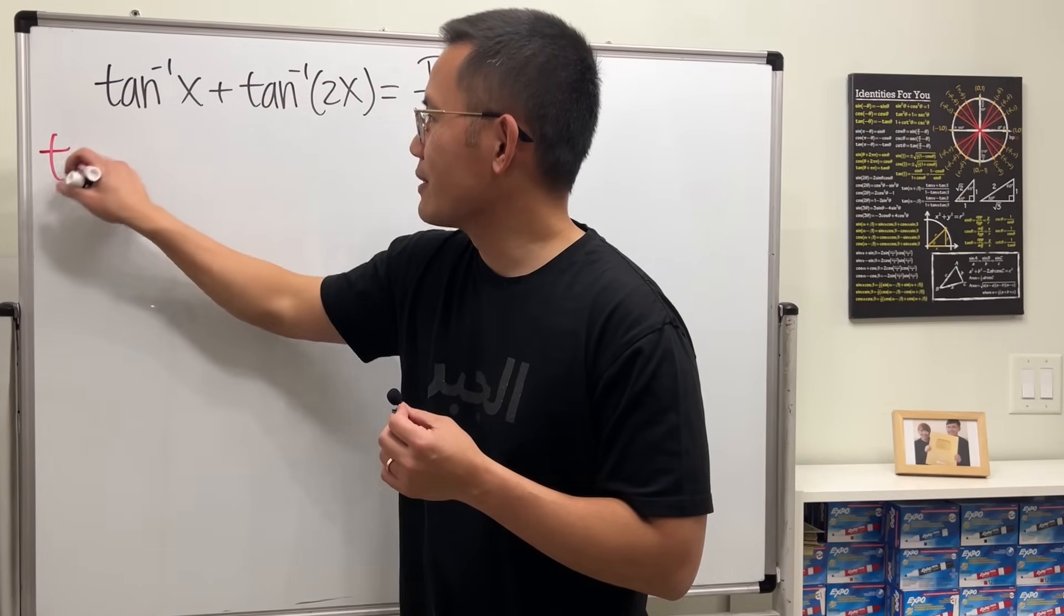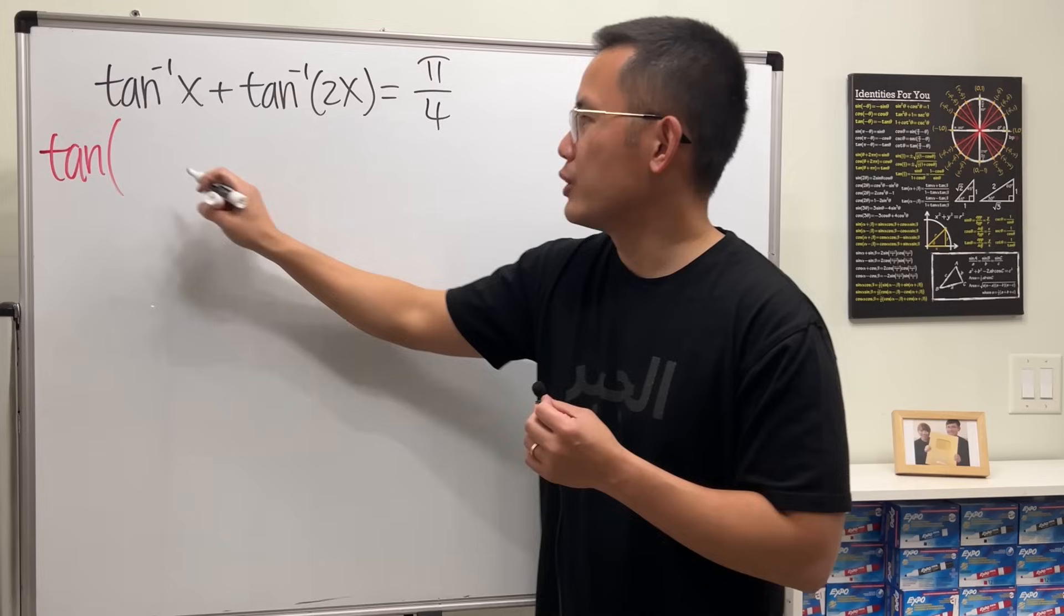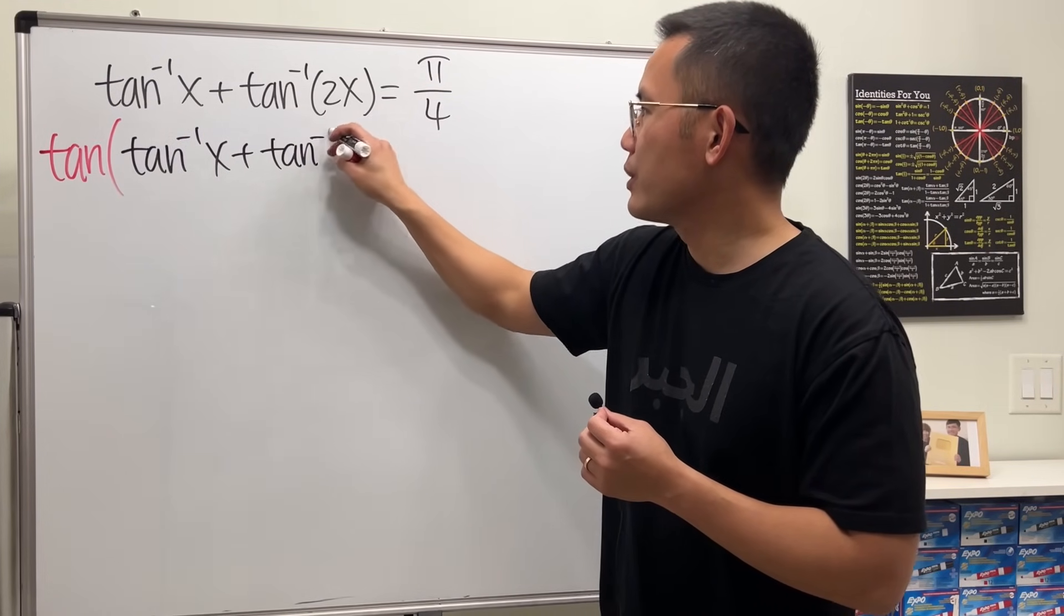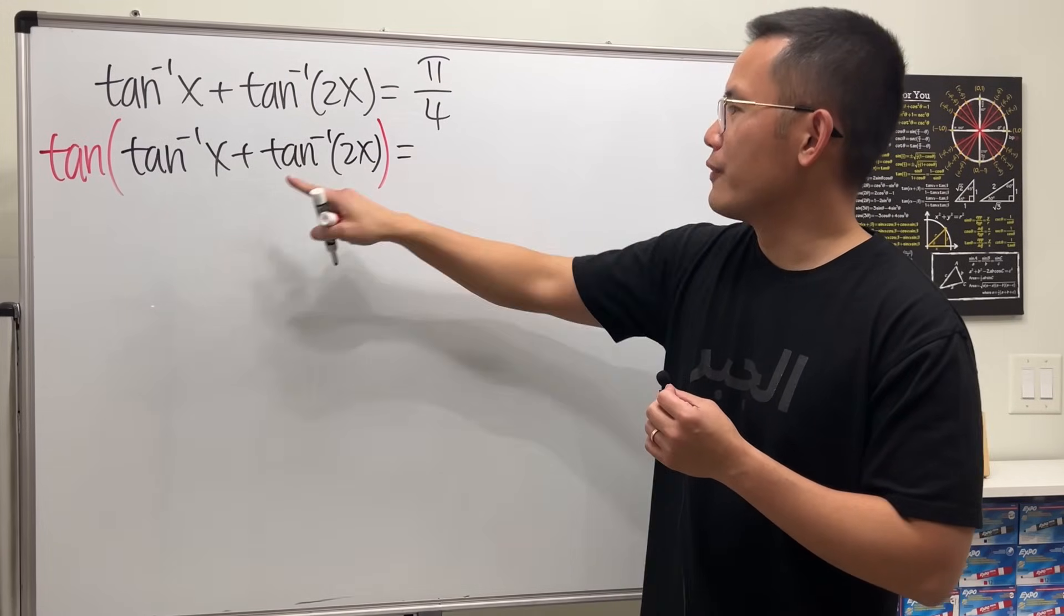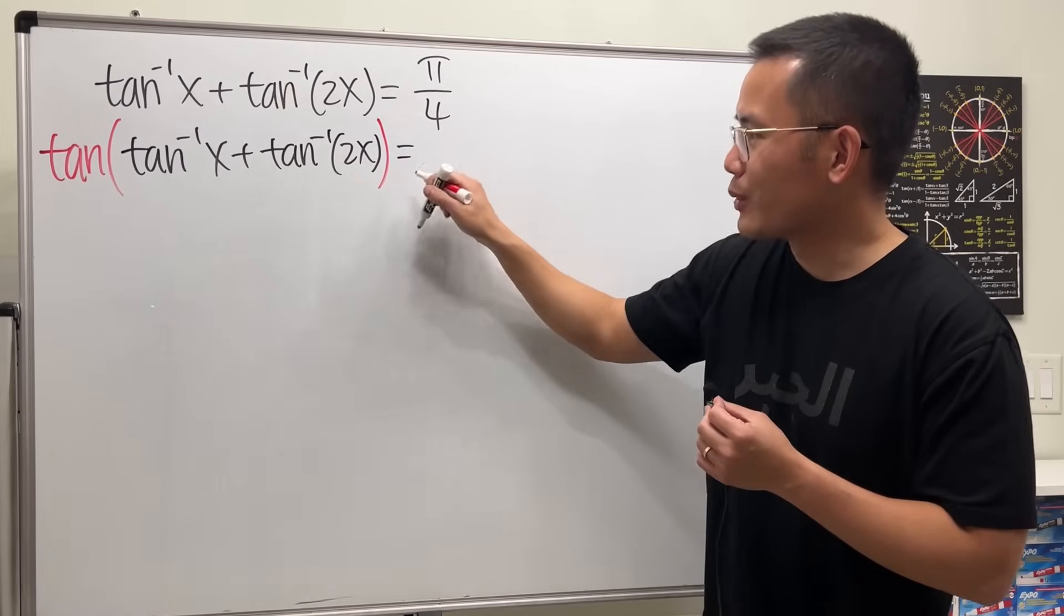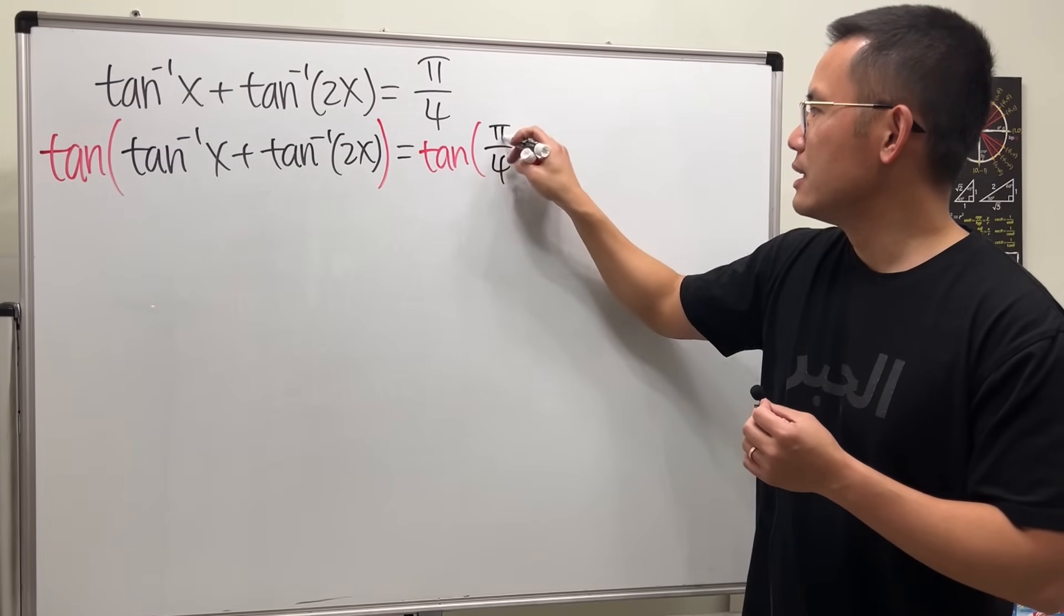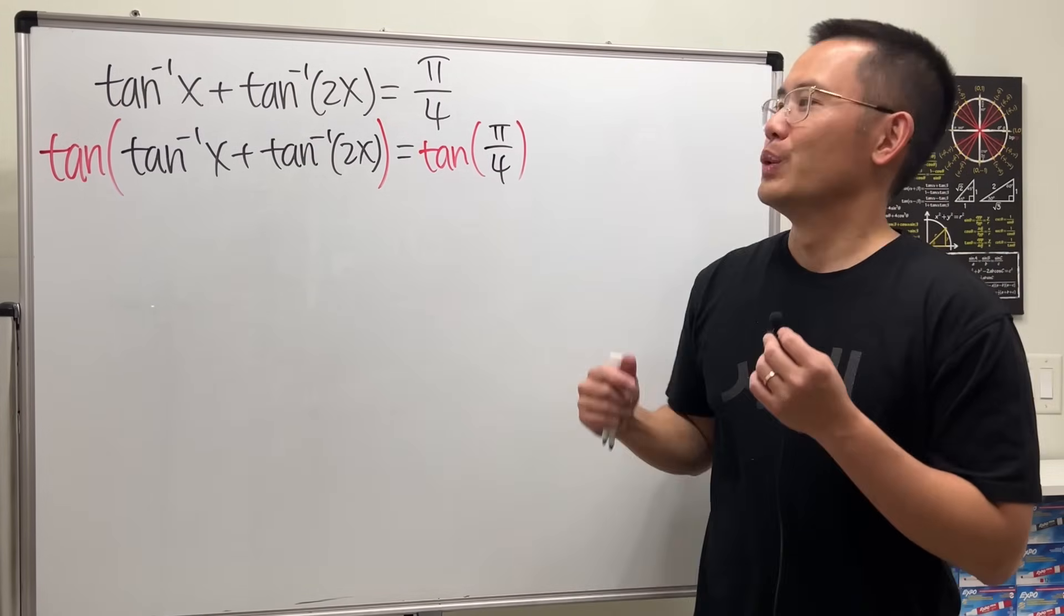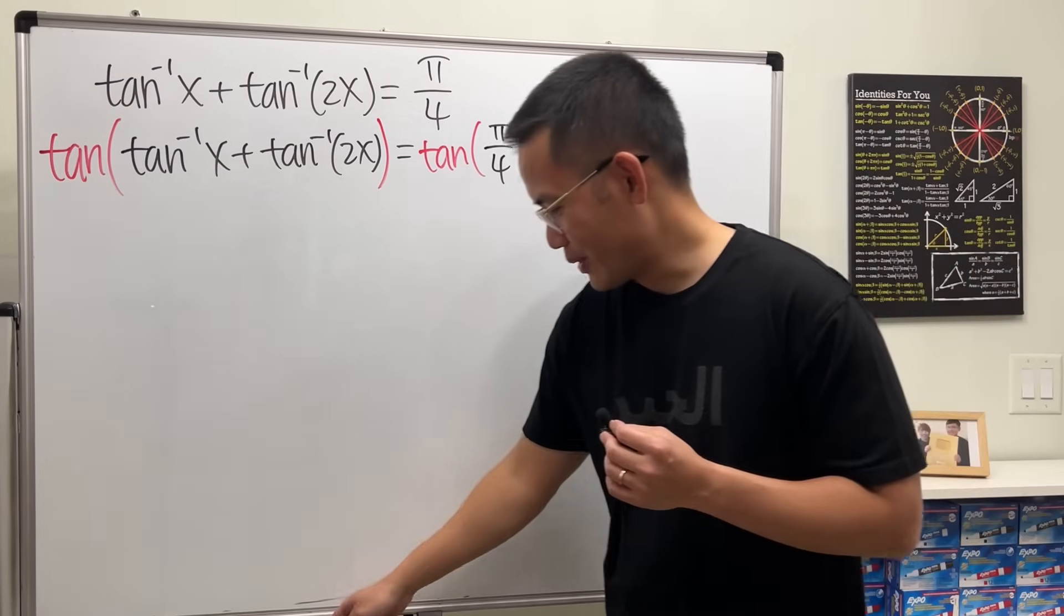But do it carefully though. I'm going to just write down another line for you guys. I'm going to apply the original tangent right here. So this is the first angle, and then we have another angle here. And then that's equal to, we take the original tangent both sides. So it's like this. This is easy, it's just one. That, what is it though? Well, we have to use the formula. So here we go.